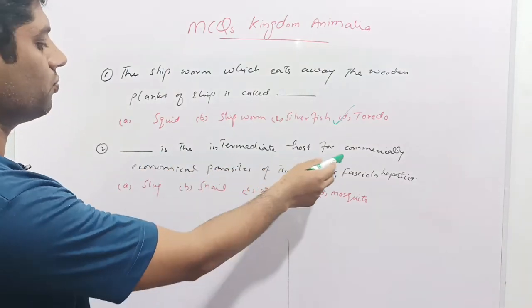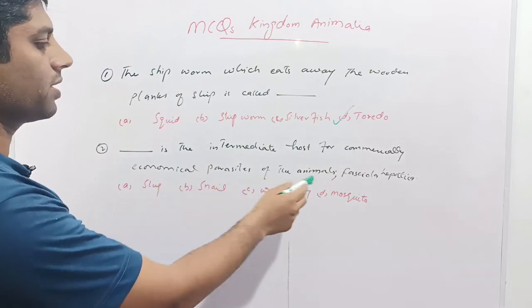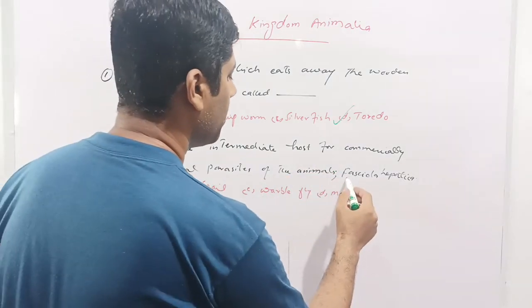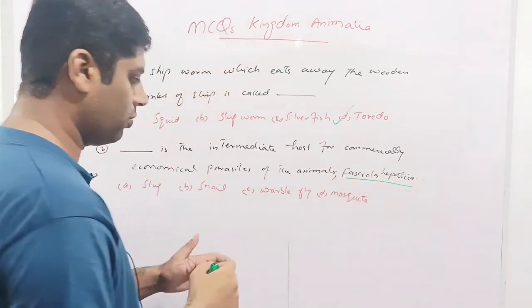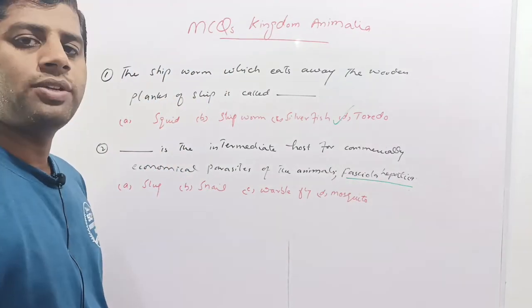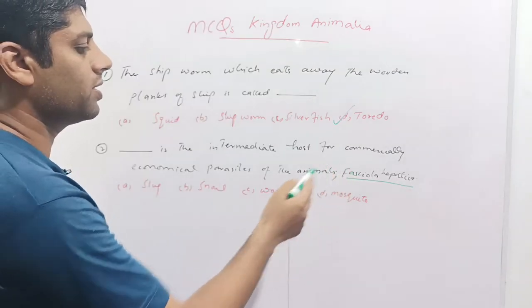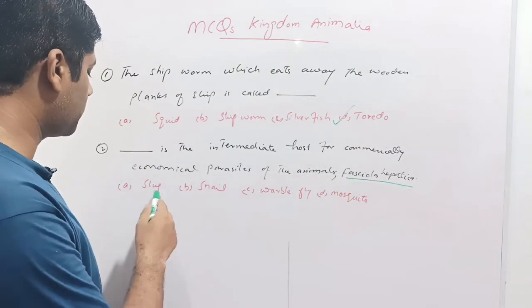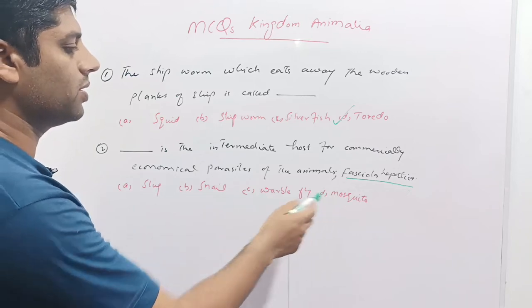The next question asks: what is the intermediate host for the commercially significant parasite Fasciola hepatica? Fasciola hepatica is an important parasite of bovines, sheep, goats, and buffaloes, basically infesting the liver of the animals. Given options are slug, snail, rubber fly, or mosquito.